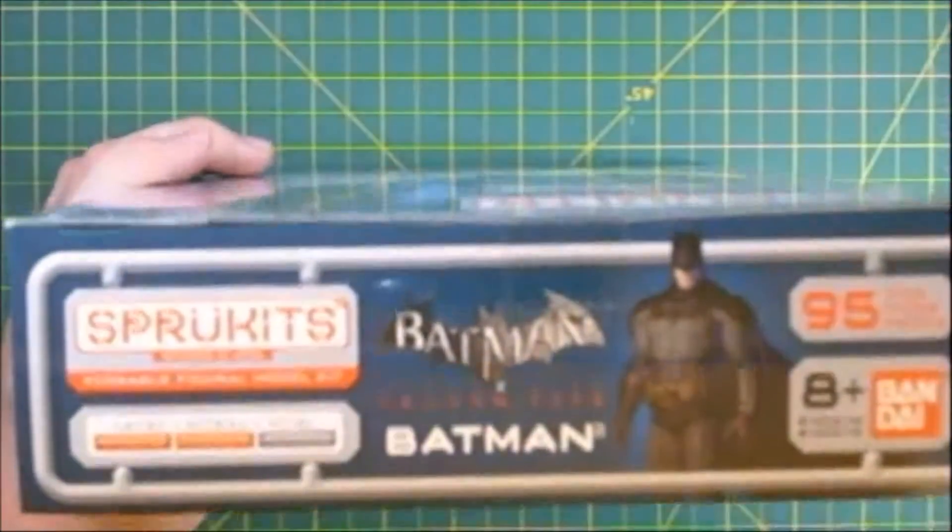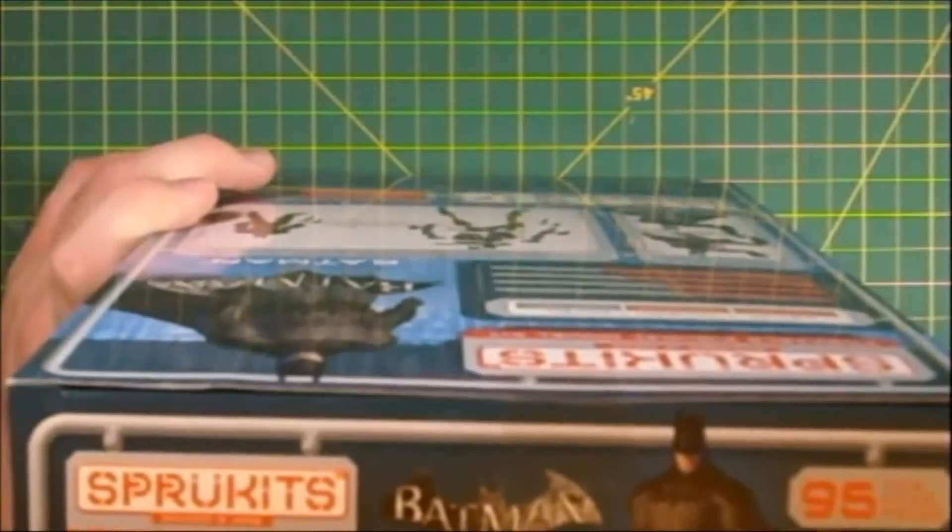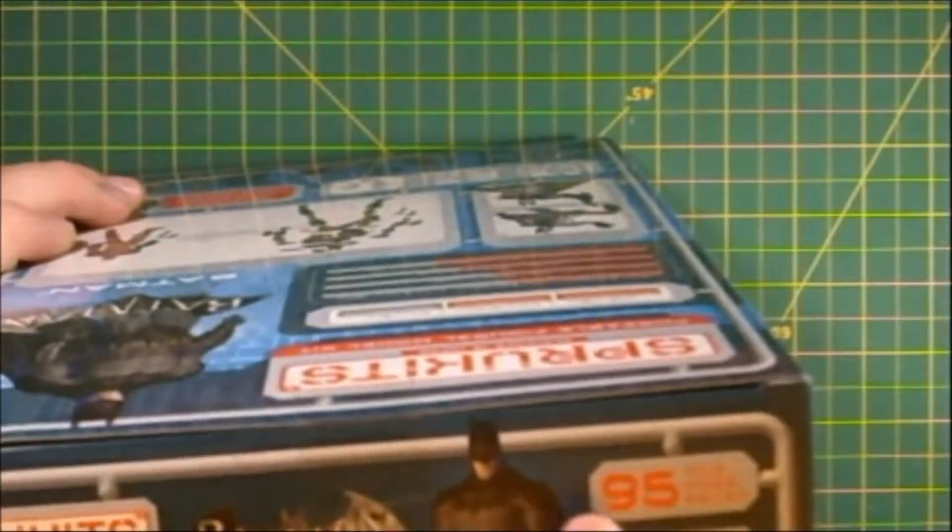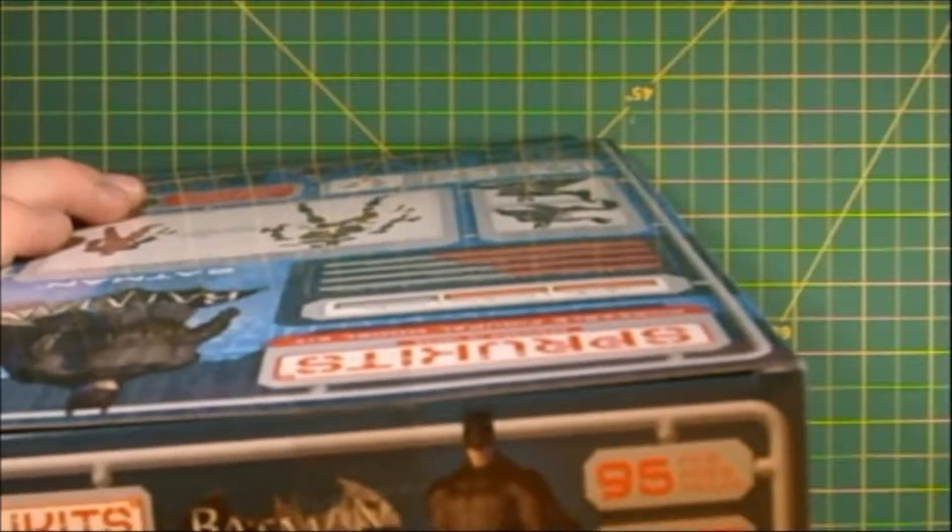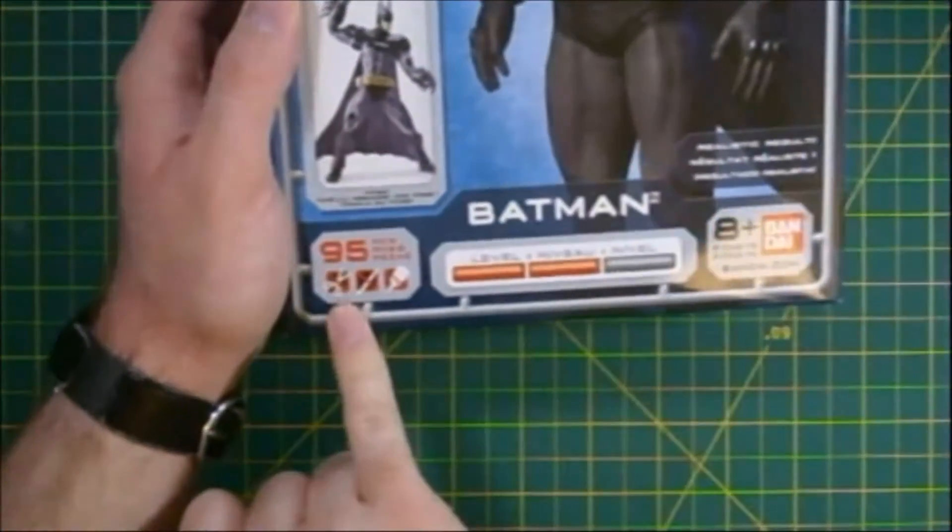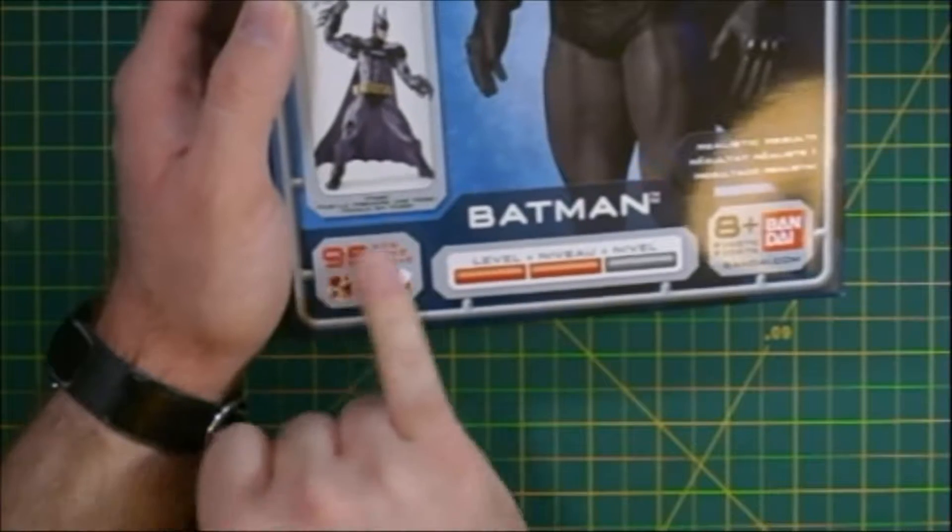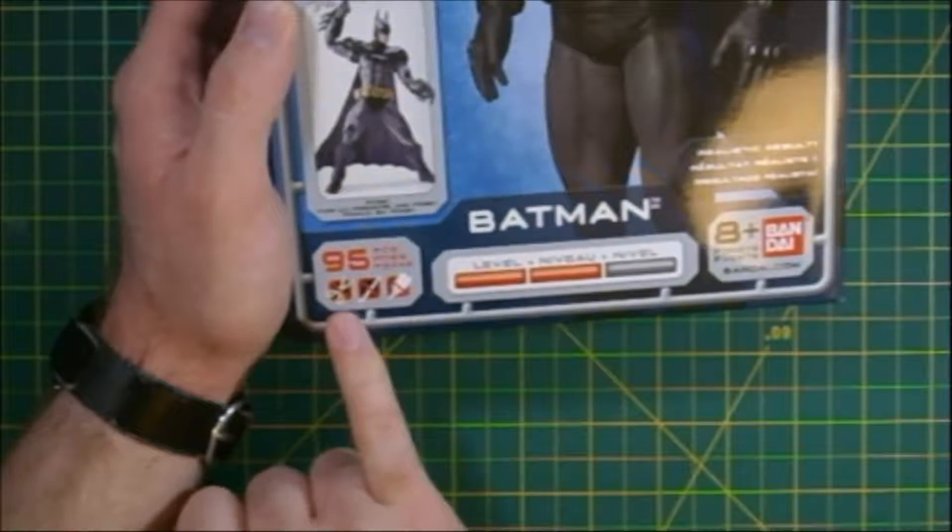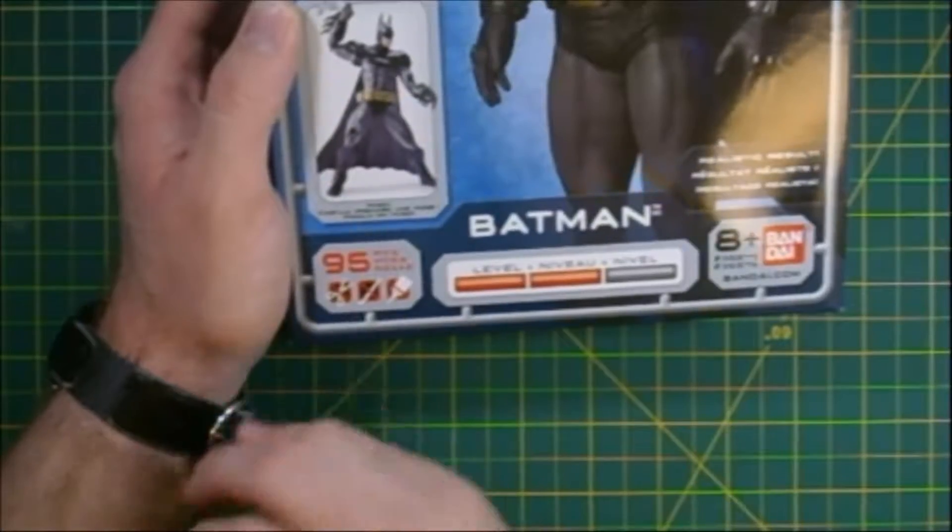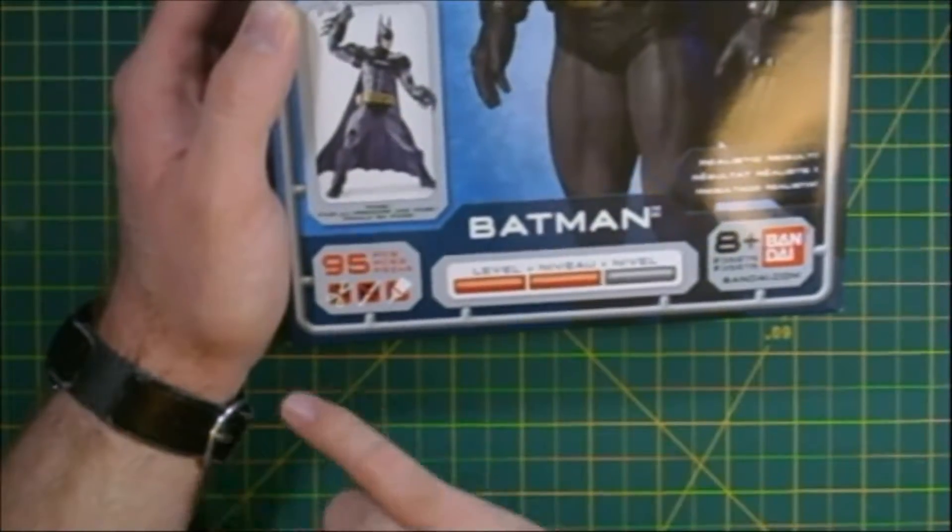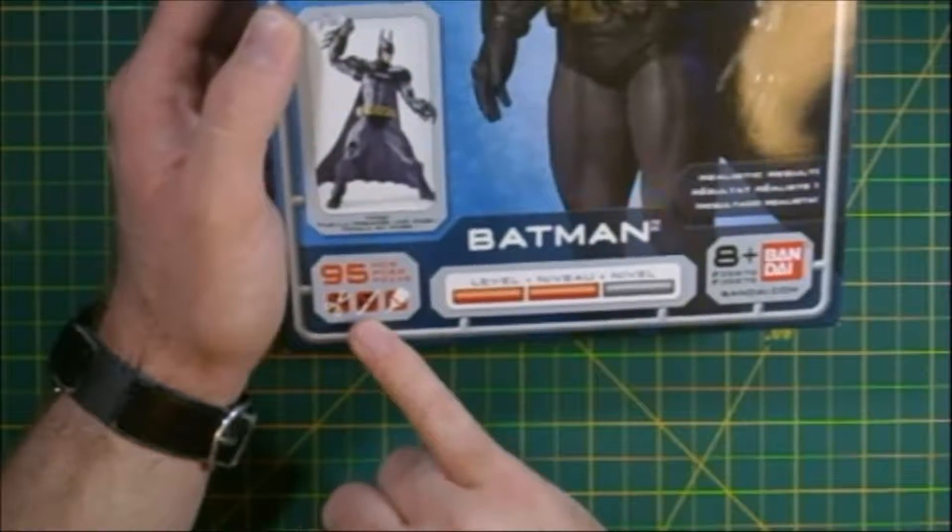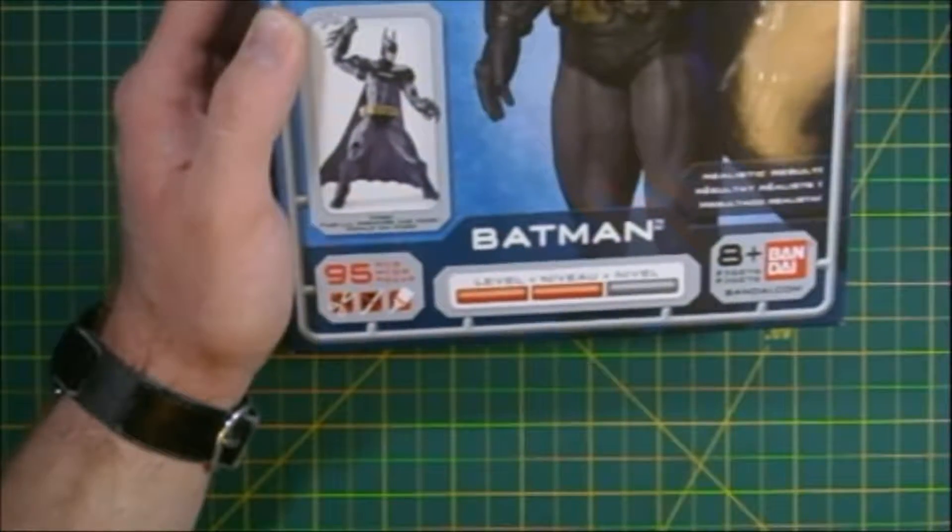Up at the top here, we've got a very similar thing to what we saw on the side here. We do see a very nice piece count here, telling us exactly we've got 95 pieces here. Again, the 8 plus age range with the Bandai logo.